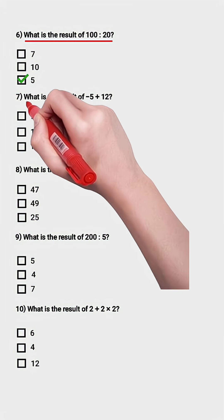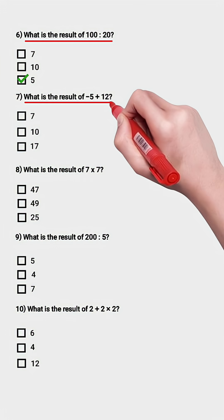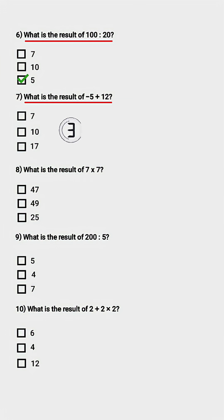Question 7. What is the result of negative 5 plus 12? 7. Question 8. What is the result of 7 times 7? 49.